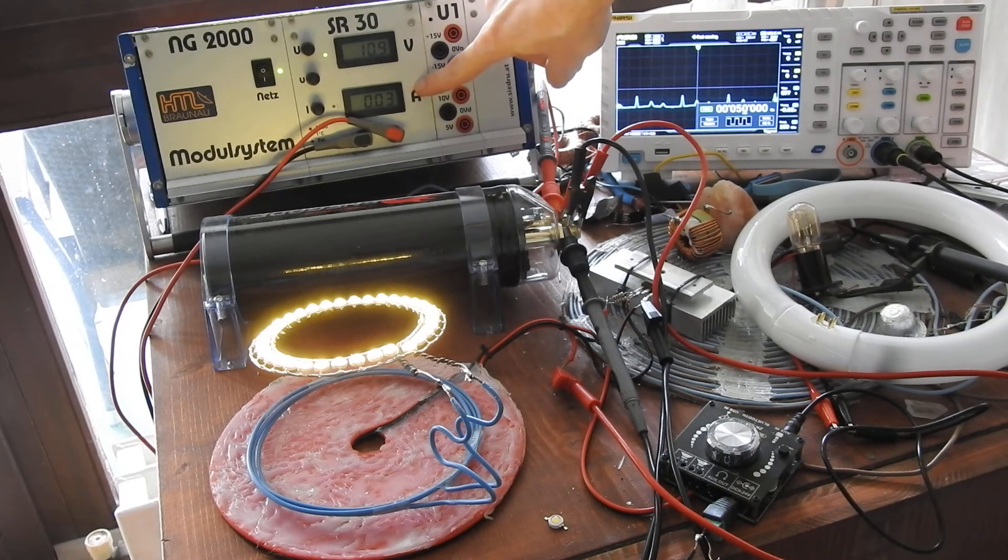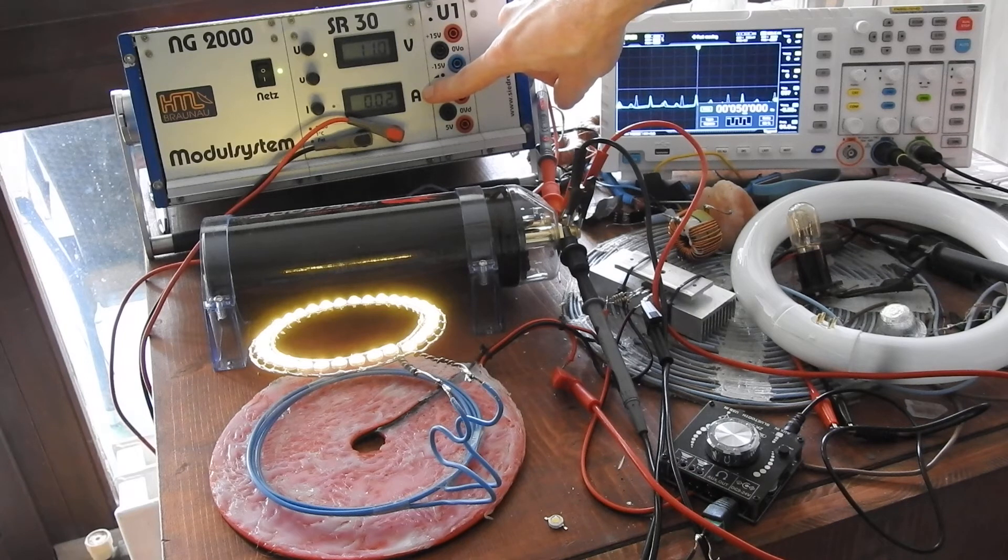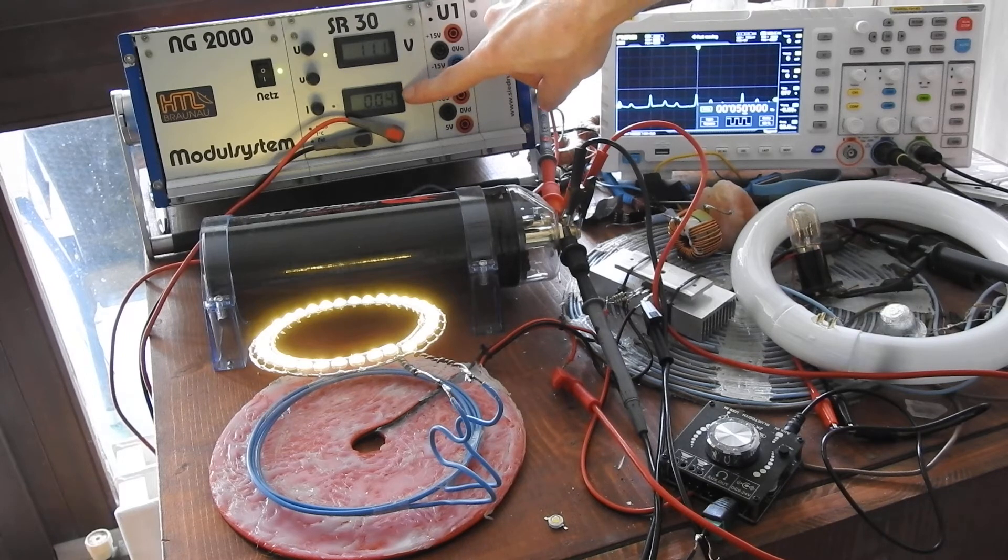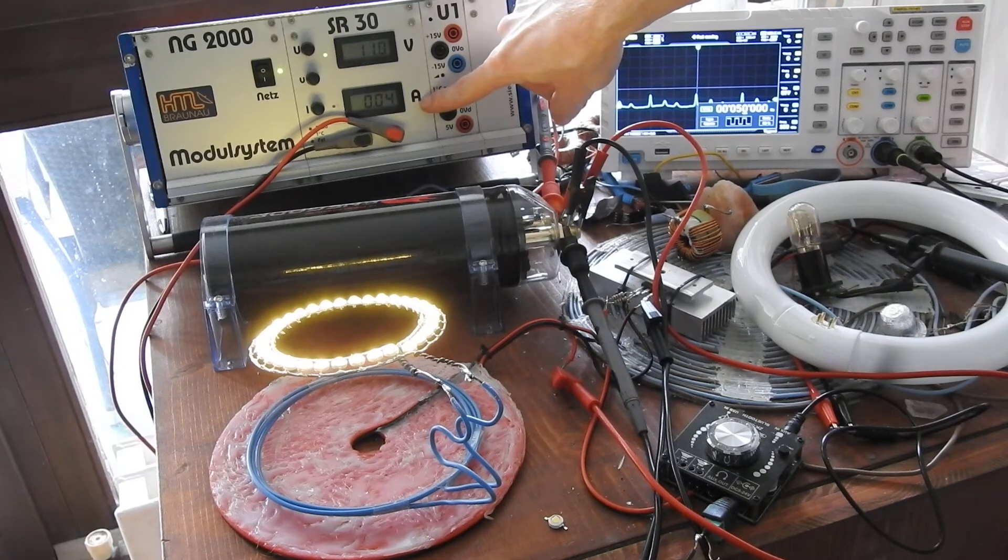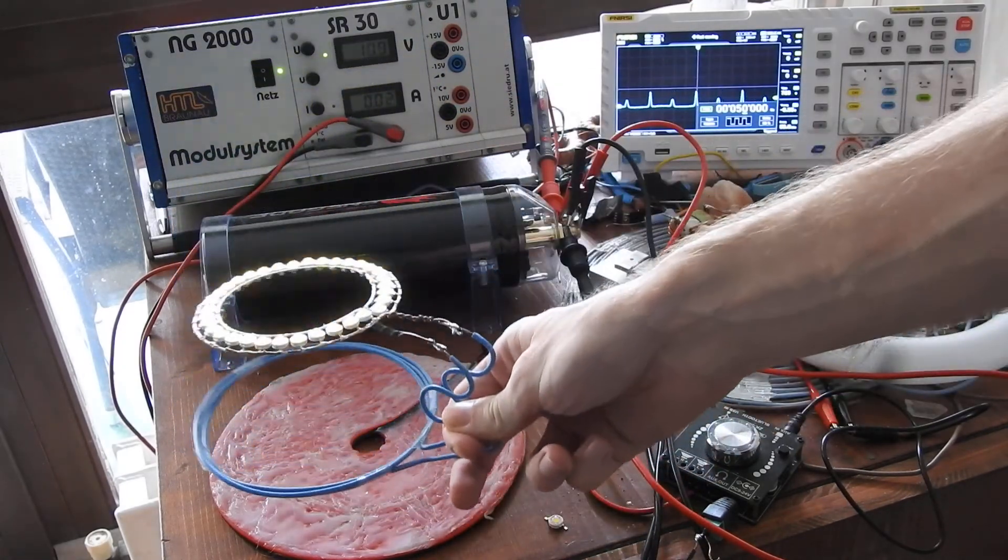We fluctuate between 0.02 and 0.04 amps as an output current to power these LEDs, which is very low.